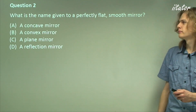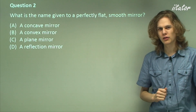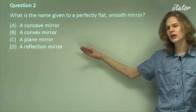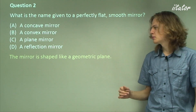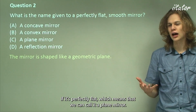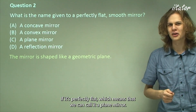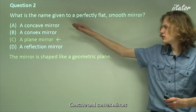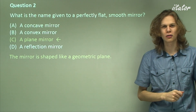Question 2: What is the name given to a perfectly flat smooth mirror? Is it a concave mirror, a convex mirror, a plane mirror, or a reflection mirror? The answer is that the mirror has to be shaped like a geometric plane if it's perfectly flat, which means we call it a plane mirror — C is the correct answer. Concave and convex mirrors are different kinds of mirrors that we'll be covering shortly.